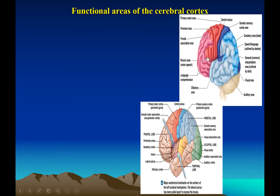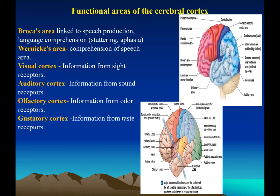Wernicke's area, adjacent to Broca's area, is for comprehension of speech. The visual cortex processes sight. The auditory cortex handles information from sound receptors. The olfactory cortex processes smell, and the gustatory cortex processes information from taste receptors. This is called brain mapping — different parts of the brain are connected to different functions, discovered largely through studying pathologies: if the frontal lobe is damaged, all its functions are lost.